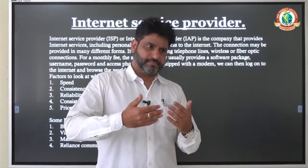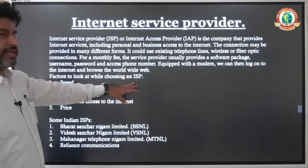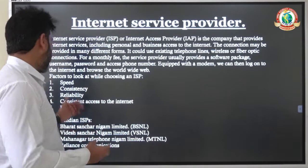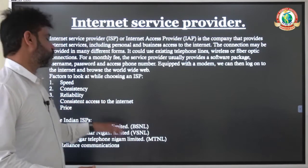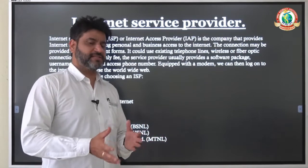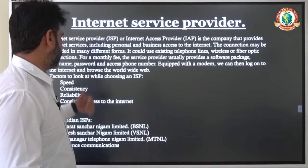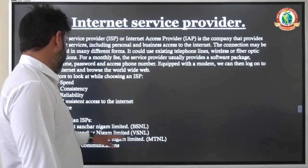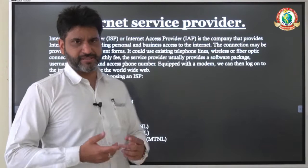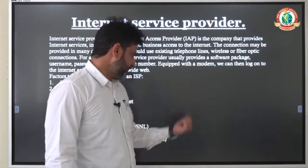The companies which provide you access to the internet are called Internet Service Providers. Factors to look at while choosing an ISP: speed — what speed the company is providing; consistency — how reliable the connection is and how consistent the access is, whether the connection drops frequently; and price — at what cost the connection is being provided. There are four popular companies in India: Bharat Sanchar Nigam Limited, Videsh Sanchar Nigam Limited, Mahanagar Telephone Nigam Limited, and Reliance Communications. Besides these, there are also a number of private companies.